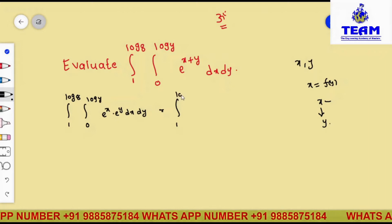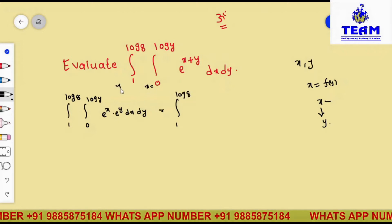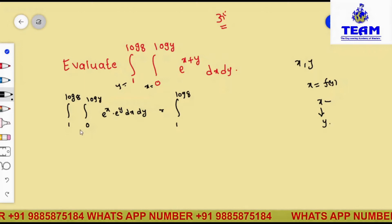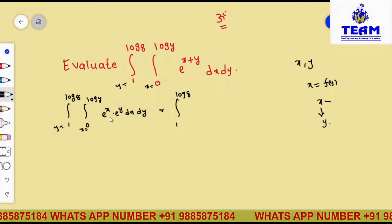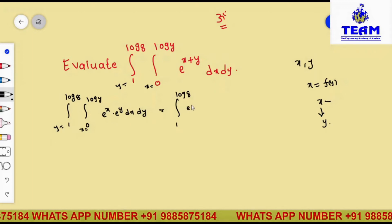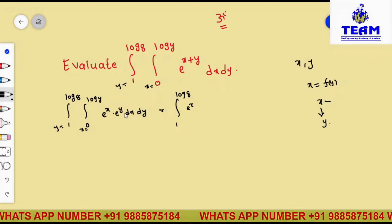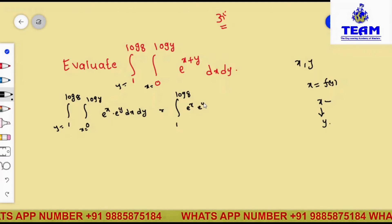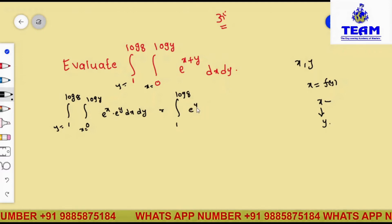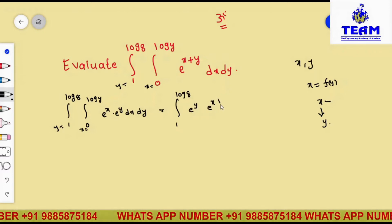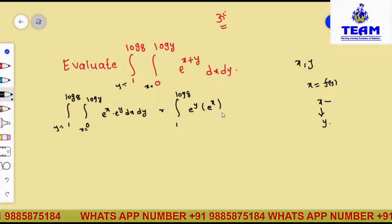The limits 0 to log y are the x limits, and 1 to log 8 are the y limits. Integrating with respect to x: the integration of e to the power of x is e to the power of x only. Since e to the power of y is a constant with respect to x, it stays as e to the power of y. So we write e to the power of y times e to the power of x, with x limits from 0 to log y.